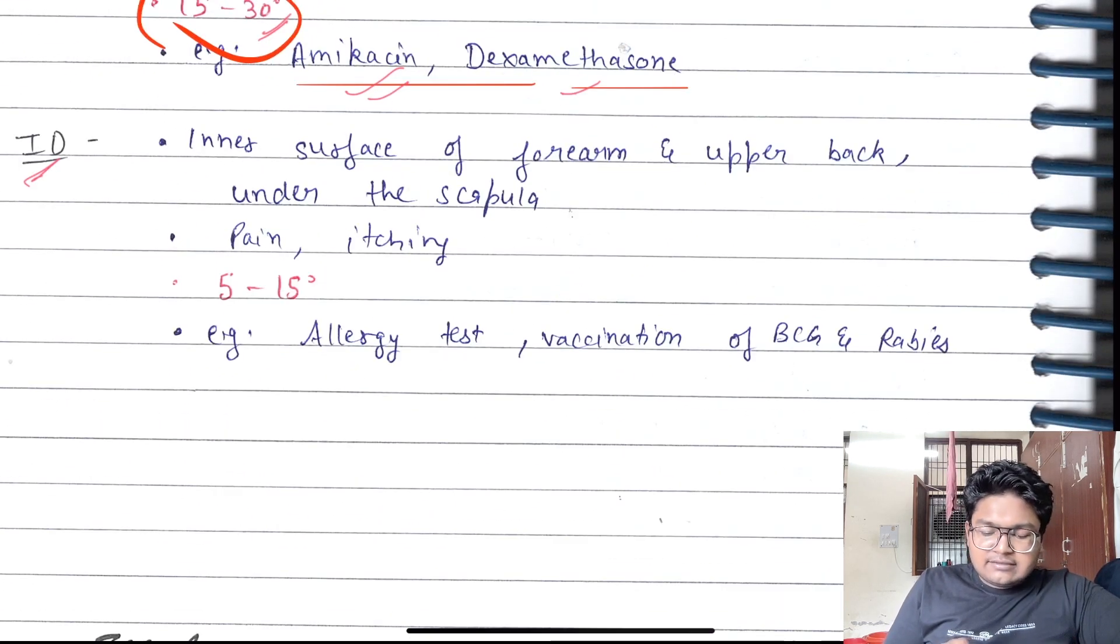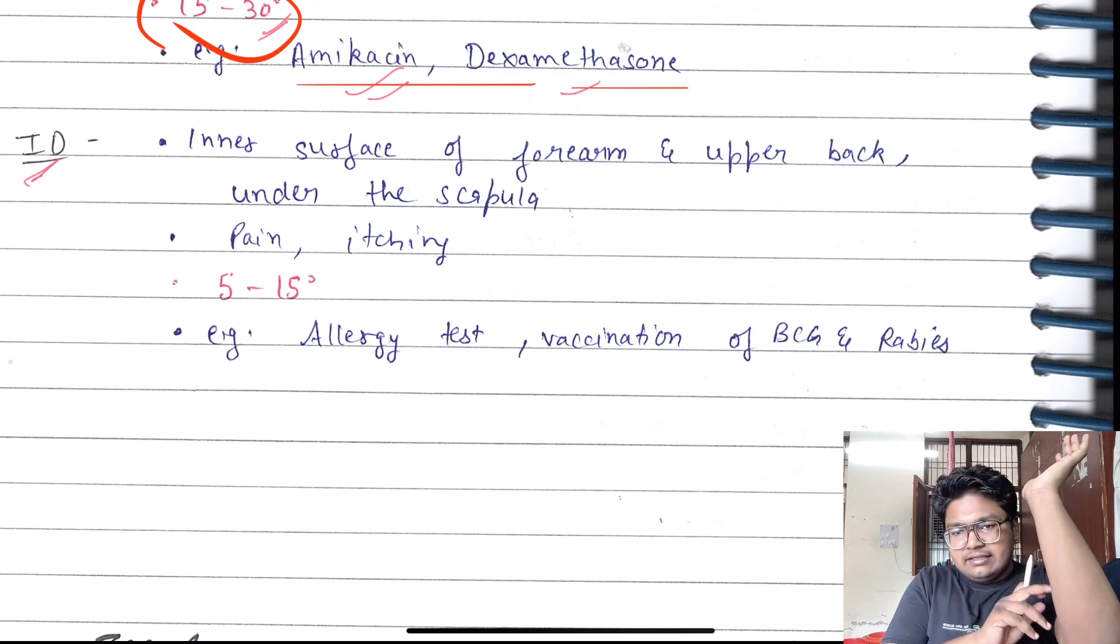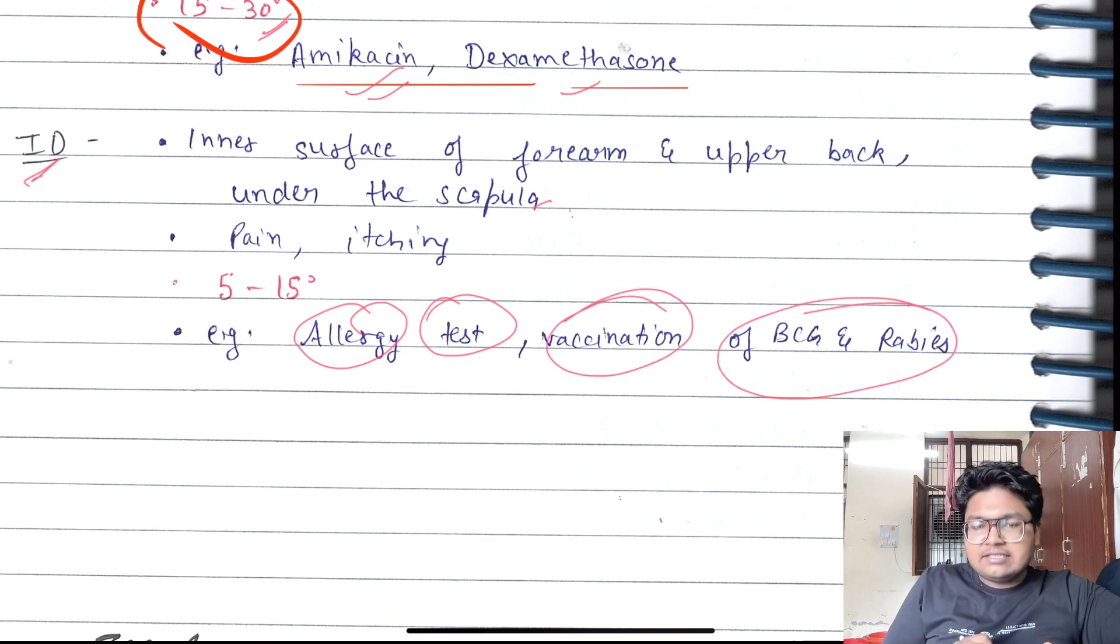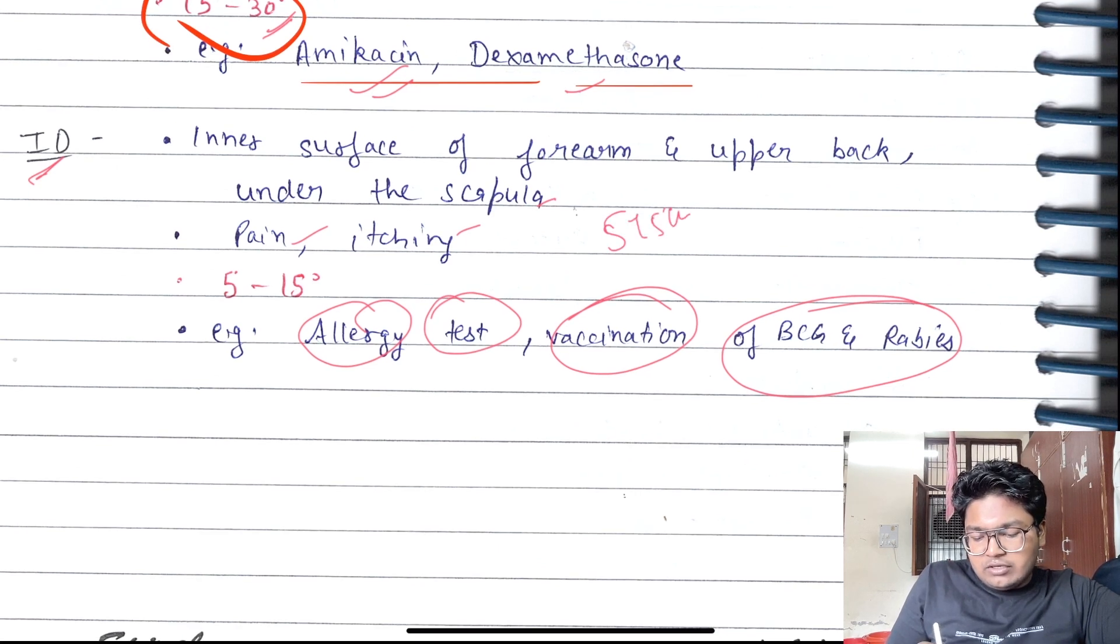Then intradermal. Intradermal: inner surface of forearm, upper back below the scapula. These are mainly used for allergy test, vaccination, BCG vaccine, rabies, etc. It can lead to pain, itching, and the angle is 5 to 15 degrees only.